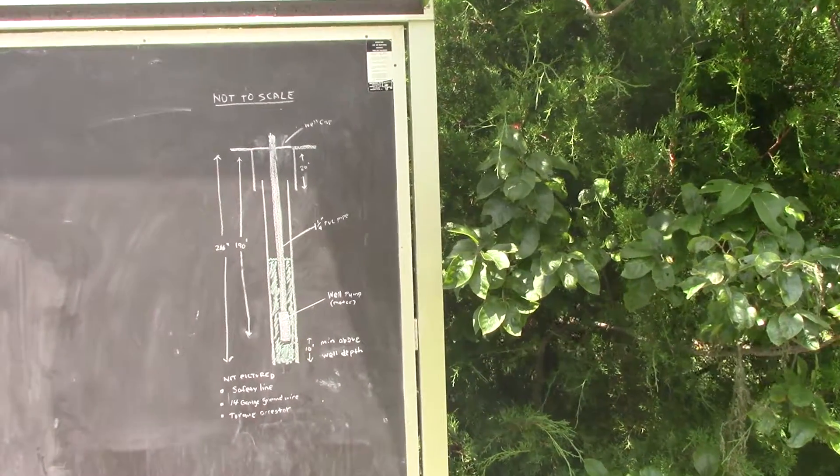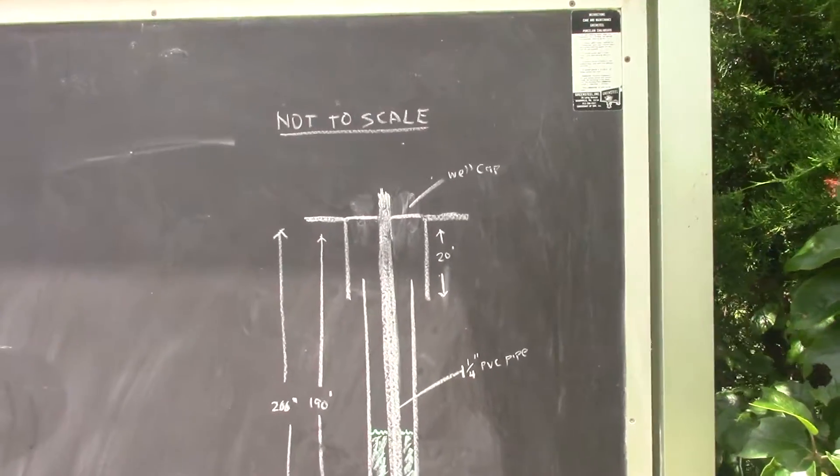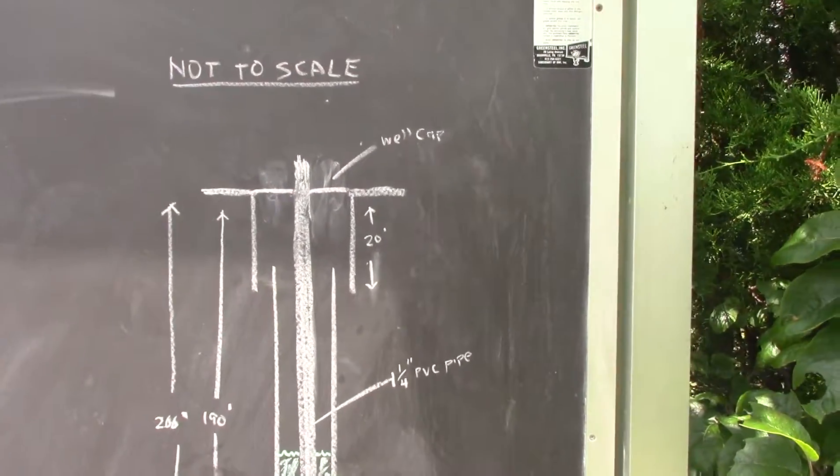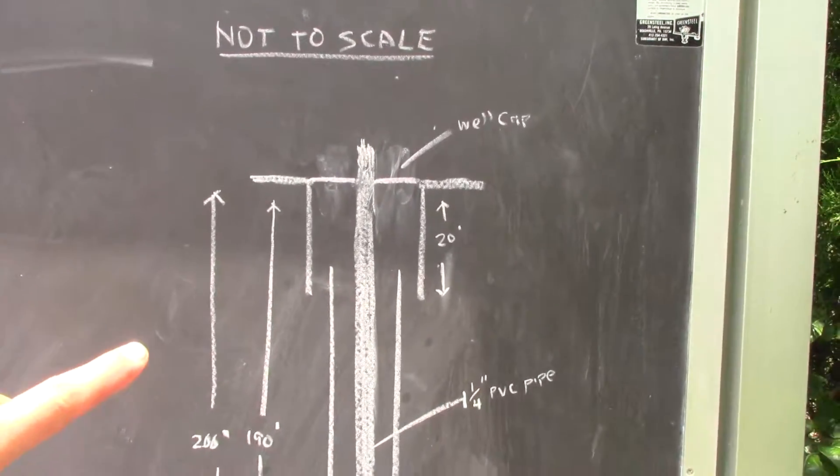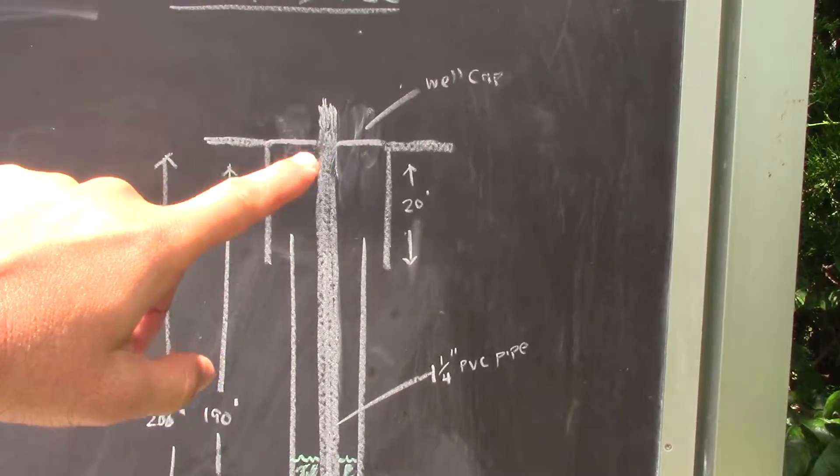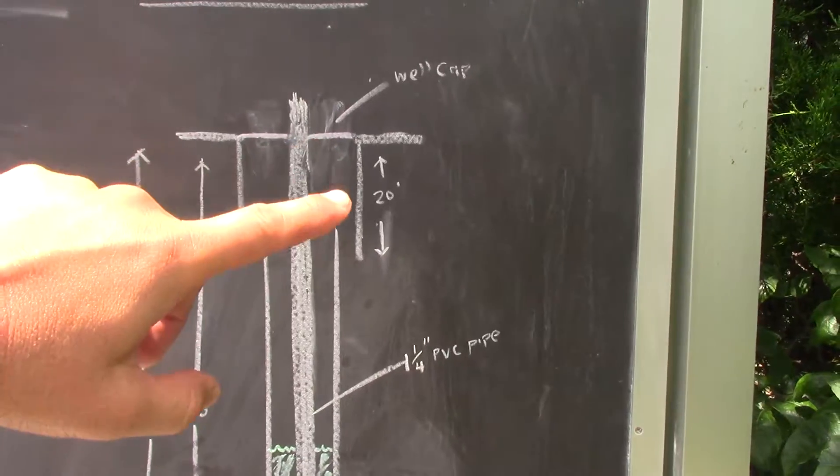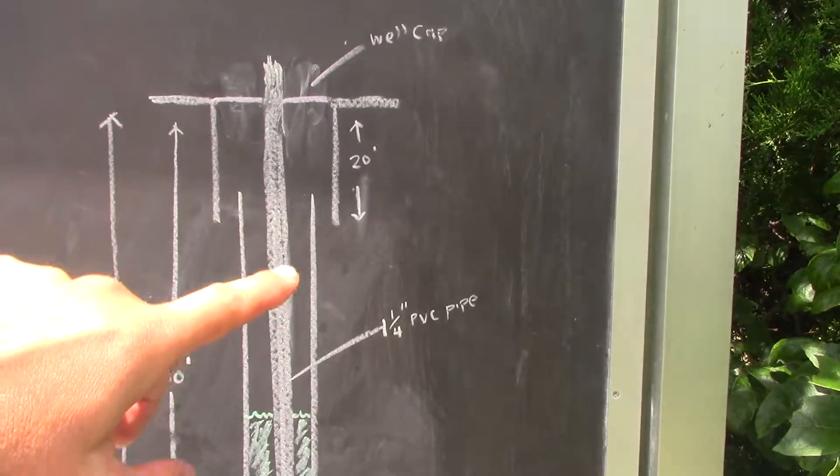I drew it on my children's chalkboard here. It's not to scale, but you can see how it's done. The well cap is on top, then it's six-inch PVC and then four-inch PVC going down.